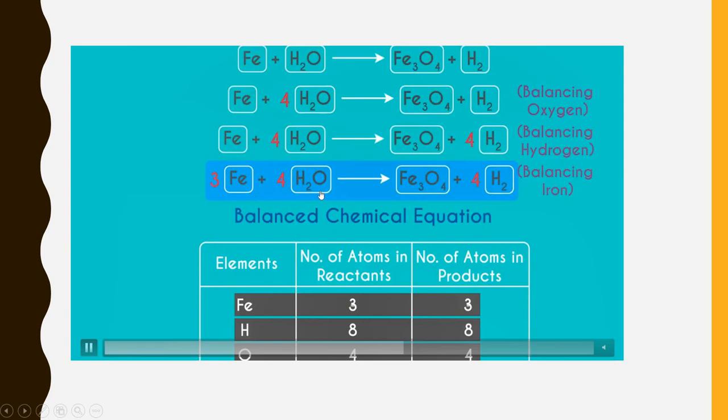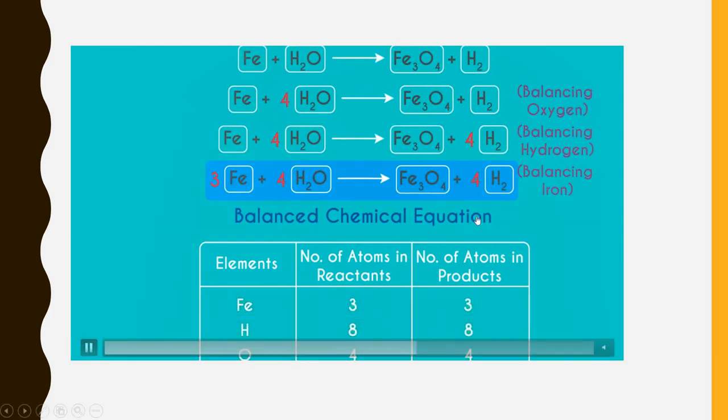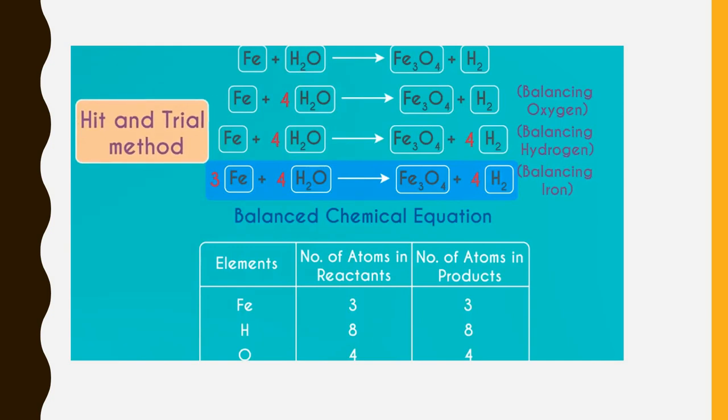Where iron 3 times, hydrogen 8 times and oxygen 4 times. Now this balanced chemical equation, what we have done in the steps are not very prominent. So this method is known as hit and try method.